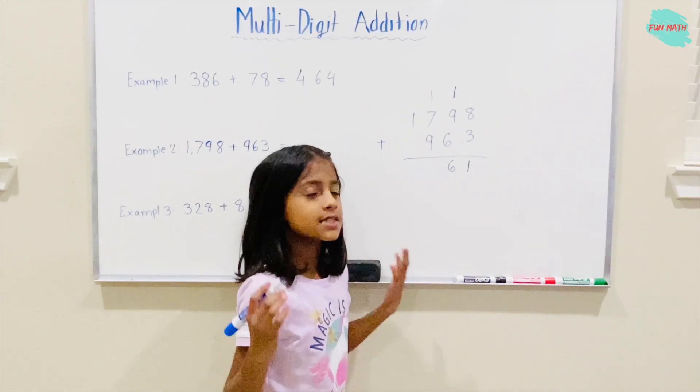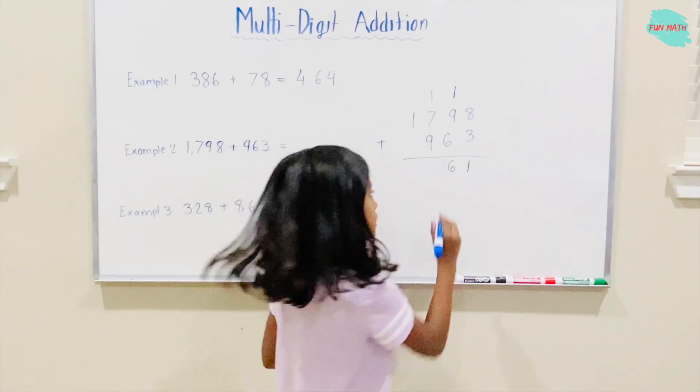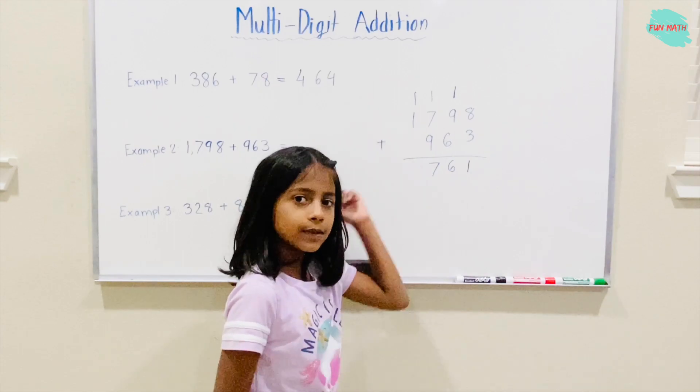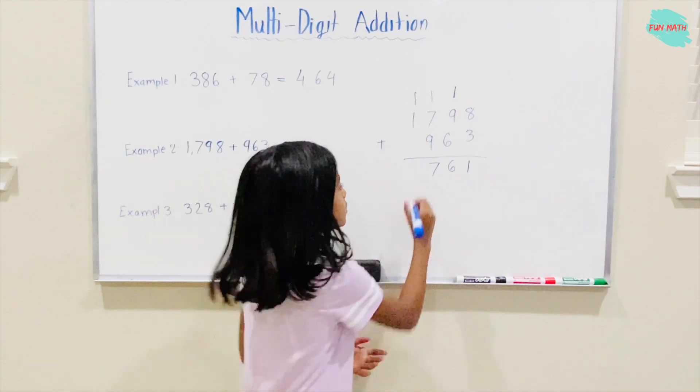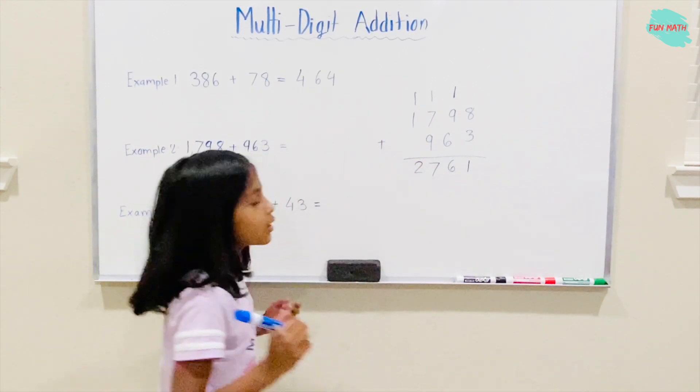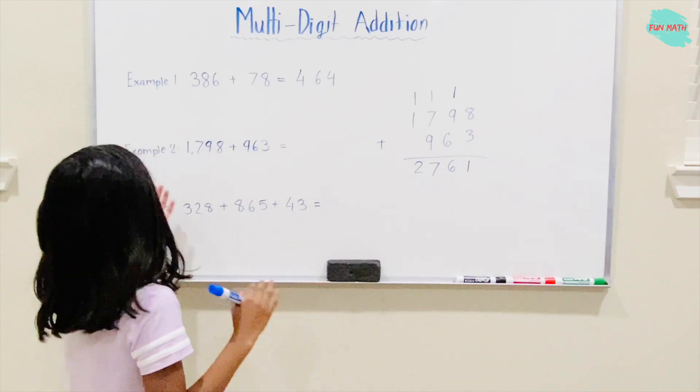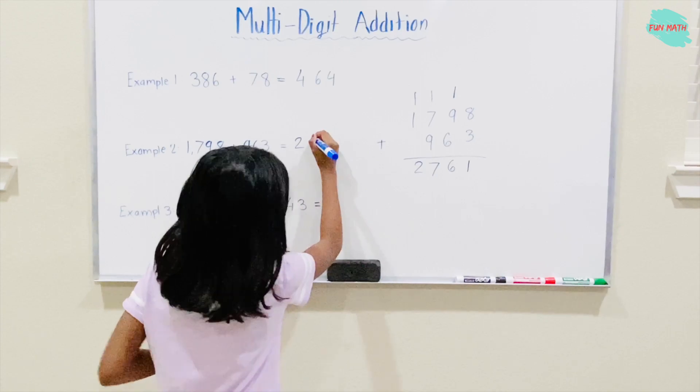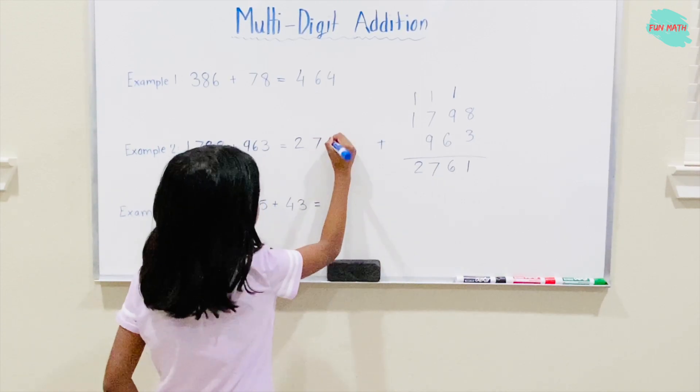1 plus 7 is 8. Plus the carried 1 equals 9. Wait, 10 plus 7 is 17. One will go under, one on top to carry. 1 plus 1 is 2. The answer for Example 2 is 2,761.